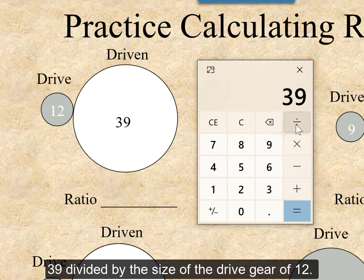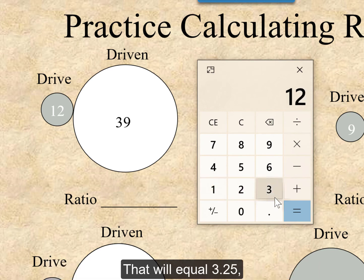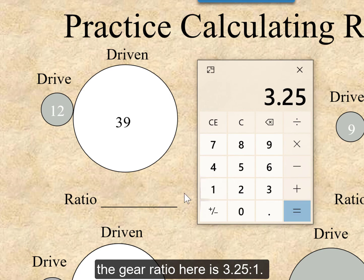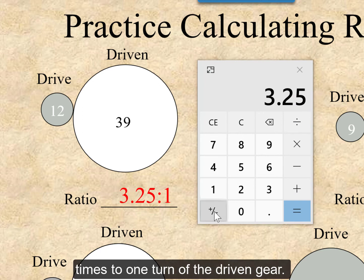39 divided by the size of the drive gear of 12. That will equal 3.25. The gear ratio here is 3.25 to 1. The drive gear will rotate 3.25 times to one turn of the driven gear.